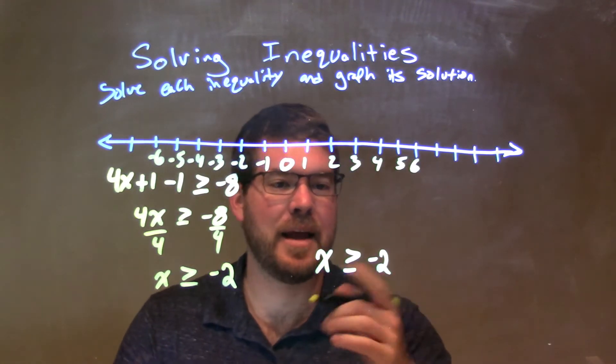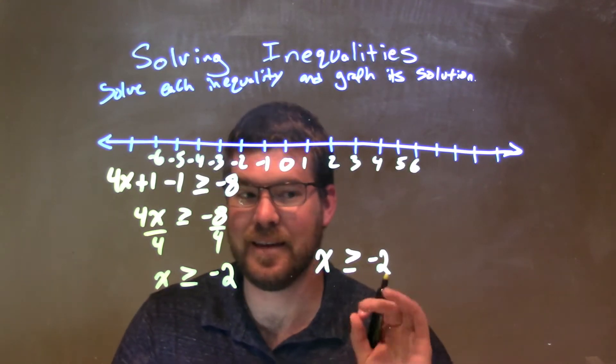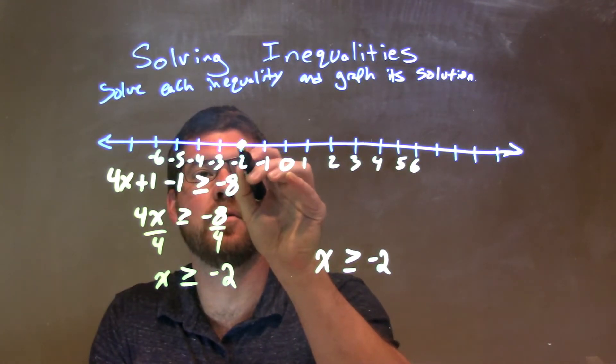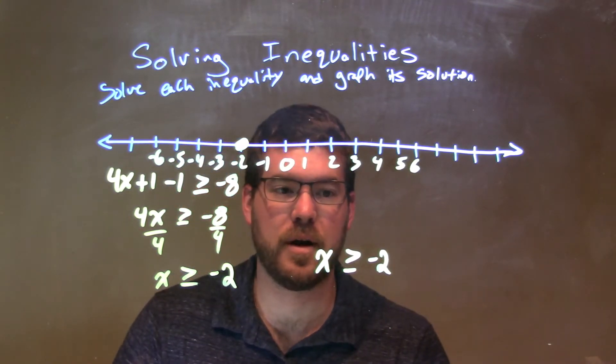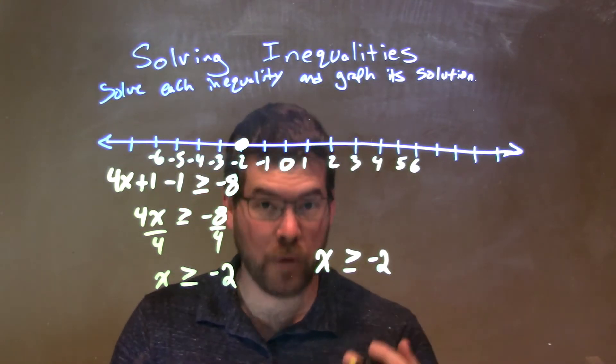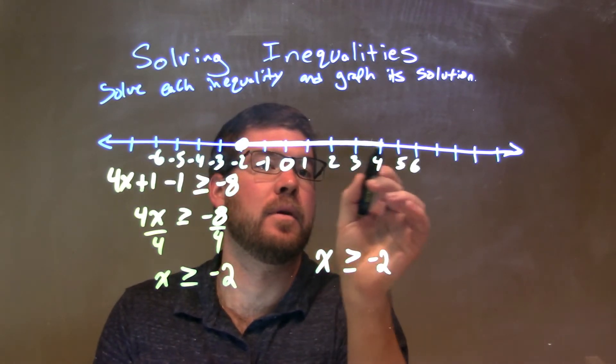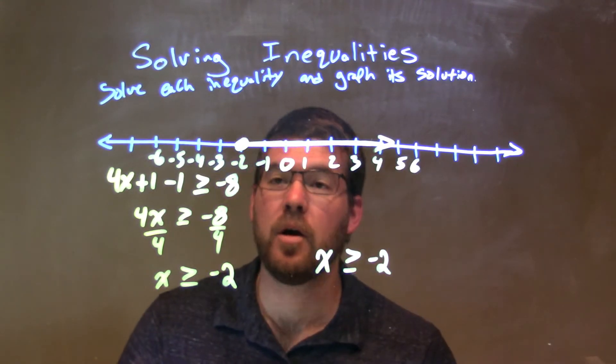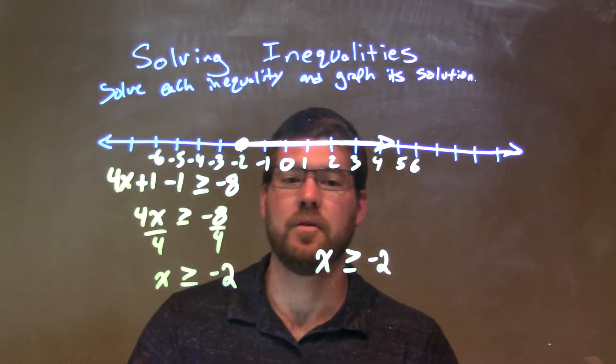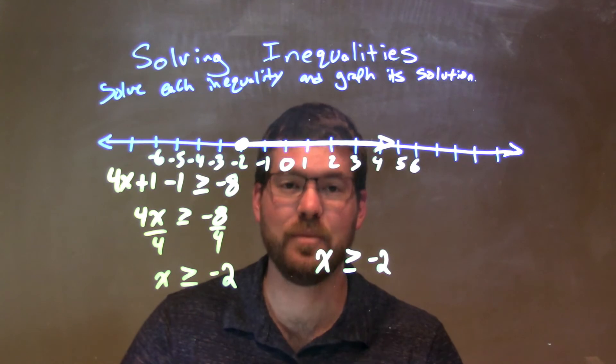What I want to do is at negative 2, I'm going to put a closed circle because it's equal to negative 2. We have a closed circle right there. Closed circle there at negative 2. And then since x is greater than negative 2 as well, put our arrow to the right. And there we have it. Our final answer here is just x is greater than or equal to negative 2.